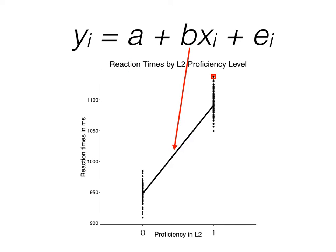Our slope is the difference in the number of milliseconds between each of our levels. And finally, the residual is the same as before. Here, this particular data point has a y value of roughly 1,140 milliseconds, but our model predicts it to be closer to 1,090.